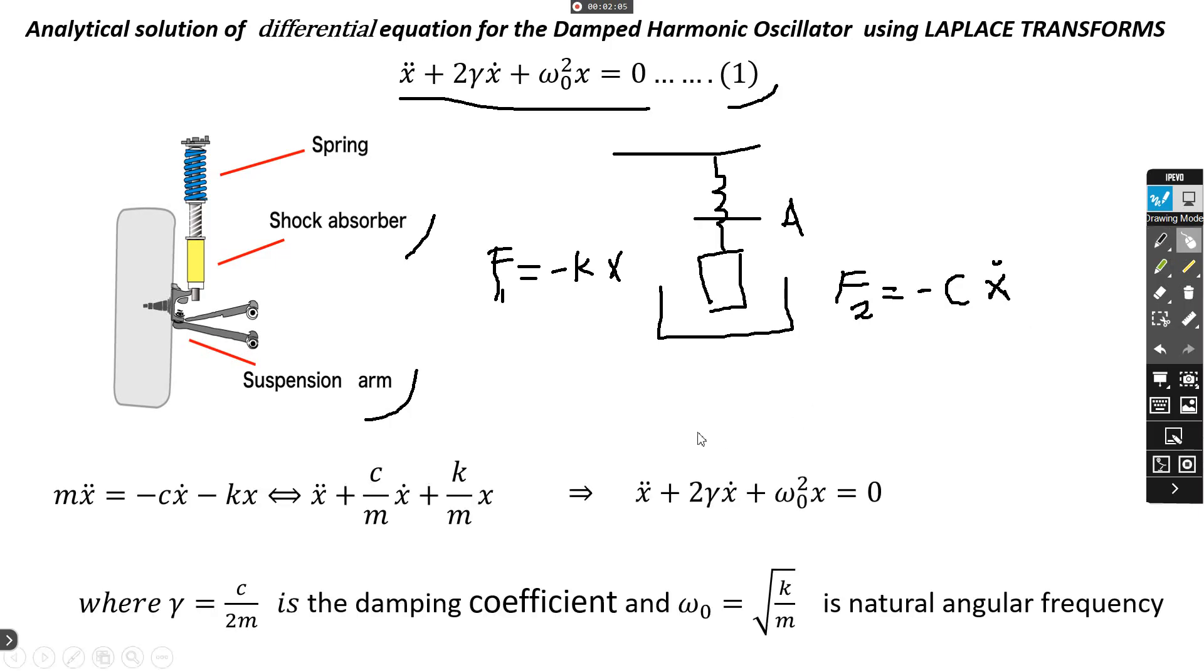Now, we can apply Newton's second law. We get this second order differential equation x double dot plus 2γ x dot plus ω₀² x equal zero, where γ is damping coefficient and ω₀ is natural frequency.